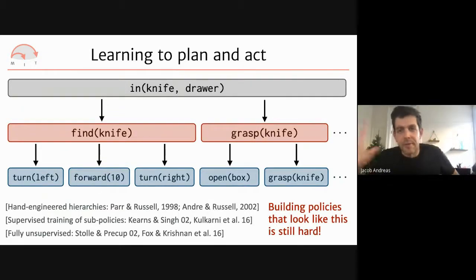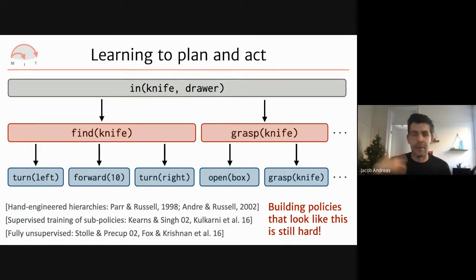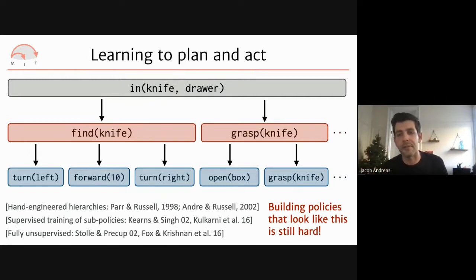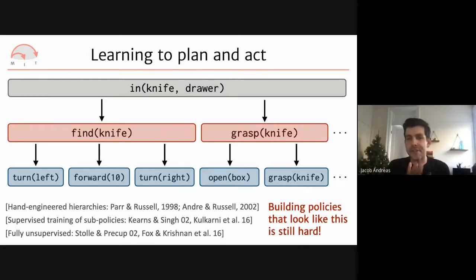To model intermediate structure, we build two models: one that decomposes abstract goals into sequences of high-level subtasks, and a second that translates each subtask into a sequence of low-level actions. There's a huge literature on hierarchical agent architectures, but most require either hand-engineered symbolic domain representations or a pre-committed fixed inventory of skills with specialized demonstrations.